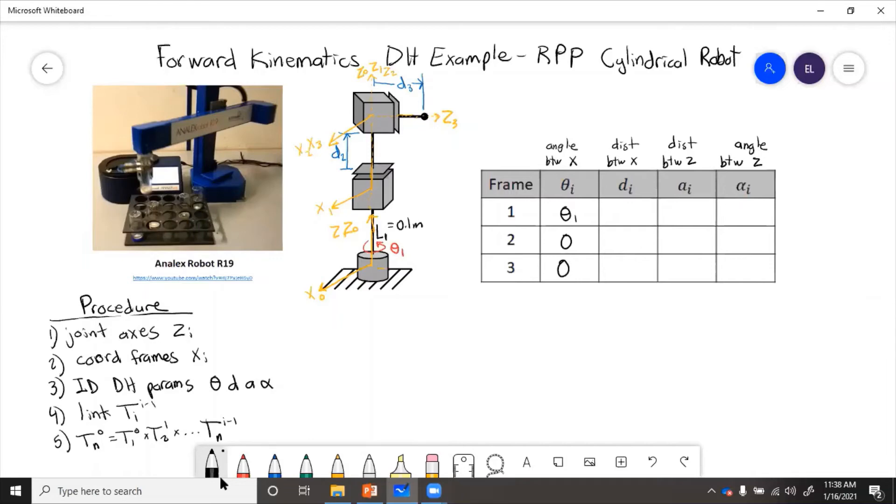So now distance between the x-axis. We can see here L1 equals 0.1, and that's the distance between x0 and x1. So L1 equals 0.1. Now, to get from frame 1 to frame 2, those x distance, that's d2. That's given right here. So d2 is a variable because it's changing. And then x2 to x3, well, those are actually the same axis. So then x2 to x3, x3 actually is on here. So that distance is going to be d3 between x2 to x3.